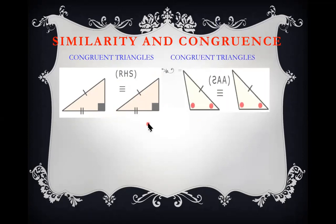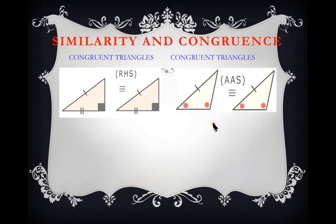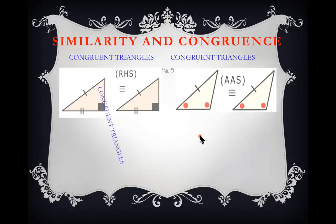Another property of congruent triangles is when two interior angles in one triangle correspond and are equal to two angles in another triangle, and one corresponding side is also equal. Since we have two angles and a corresponding side, we say Angle, Angle, Side (AAS).